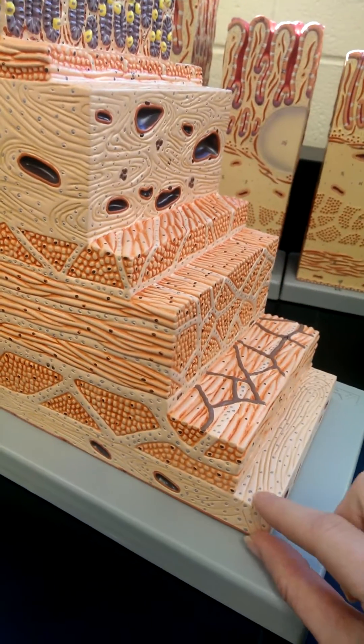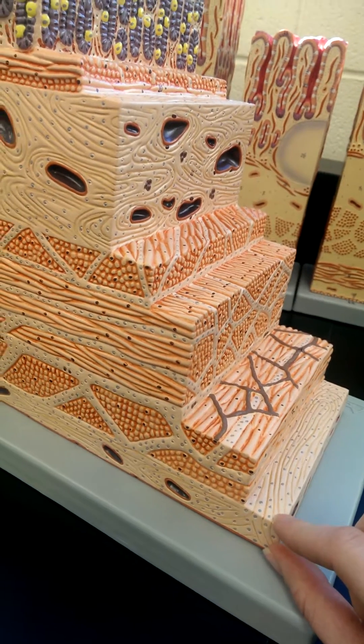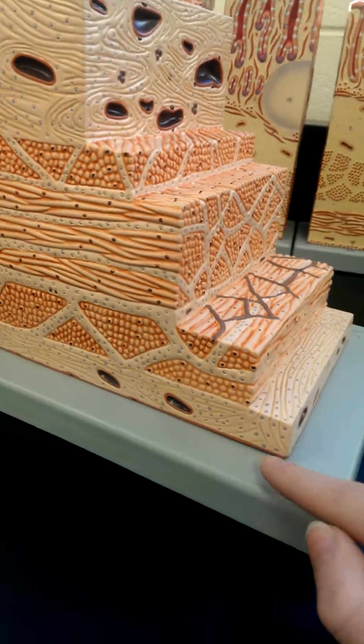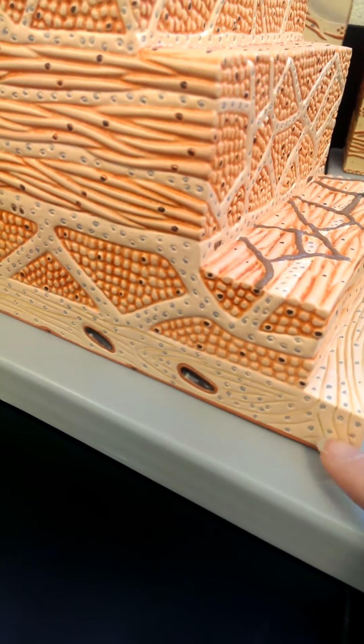And then lastly, our fourth layer, closest to the surface of that organ, furthest away from the lumen, is our serosa. And that is a simple squamous epithelium and then some loose connective tissue.